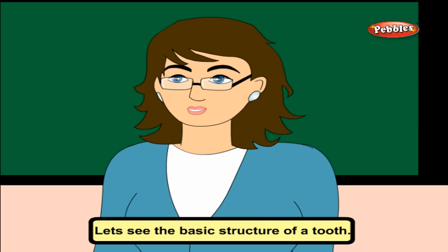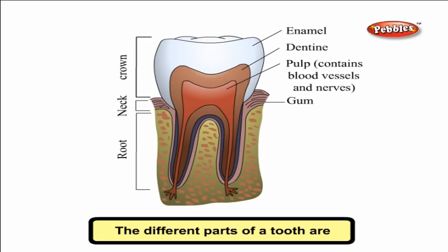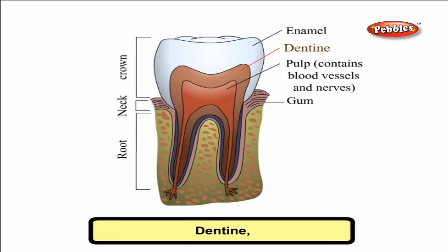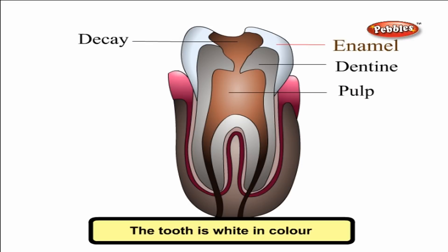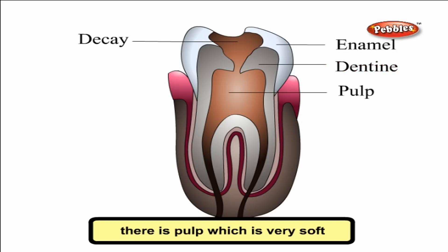Parts of a tooth. Let's see the basic structure of a tooth. It is common for all types of teeth. The different parts of a tooth are crown, root, enamel, dentine, pulp and blood vessels. The tooth is white in colour because of the enamel. The tooth is hard because of the dentine. Inside the dentine, there is pulp which is very soft and full of nerves and blood vessels.